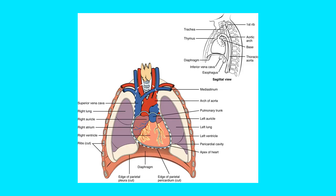In this diagram, looking at a sagittal view of the thoracic cavity, you can see your right lung and left lung. Here's the base and then the apex. It's pointed a little bit more towards the left of center — if this is the midline, you can see it's not lined up exactly in the middle.